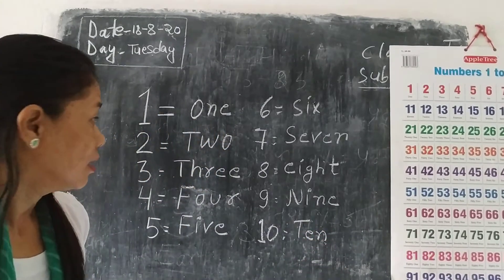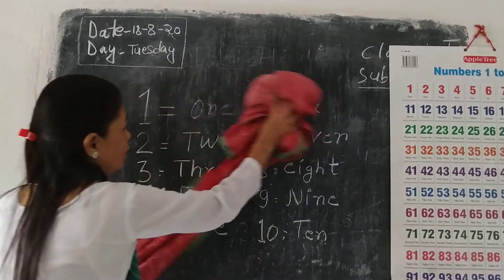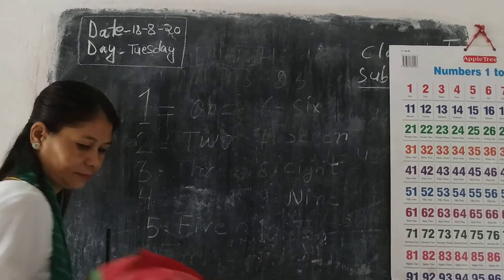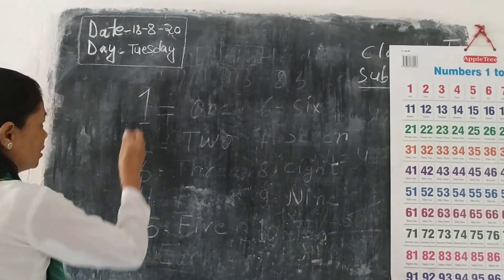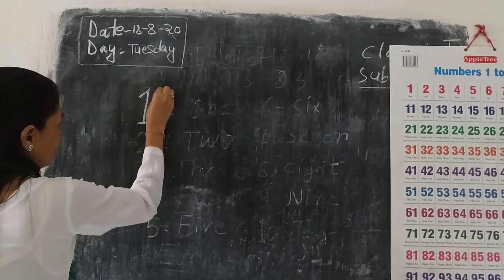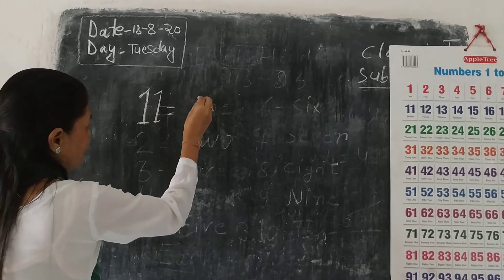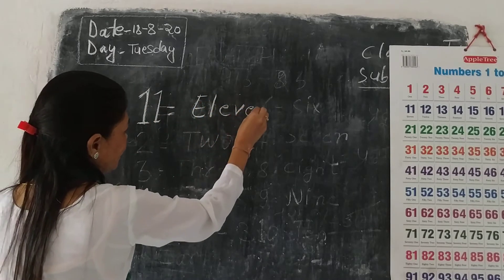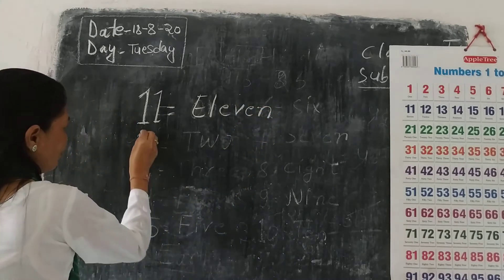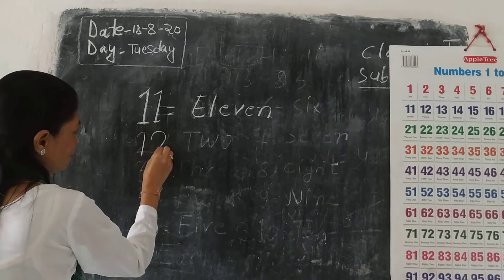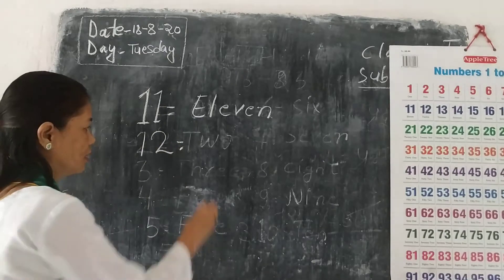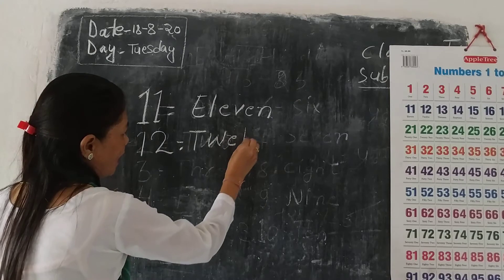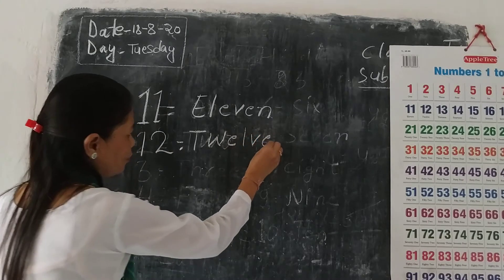And this? Number 11 to 20. What is this? 11 — E-L-E-V-E-N. 11. And what is this? 12 — spelling: T-W-E-L-V-E. 12.